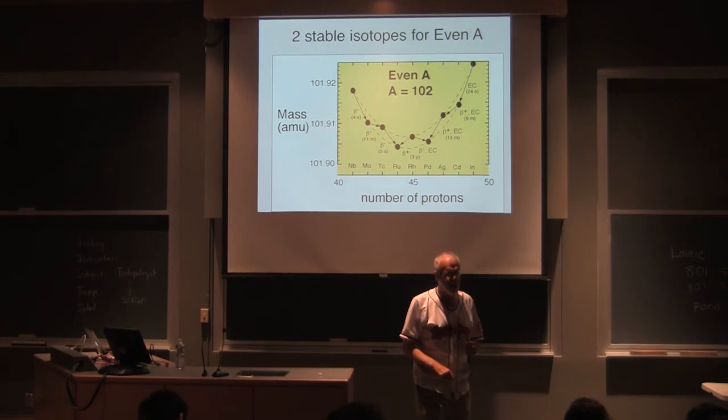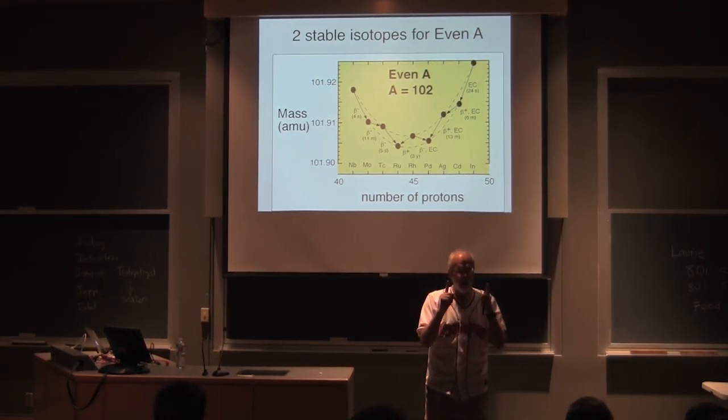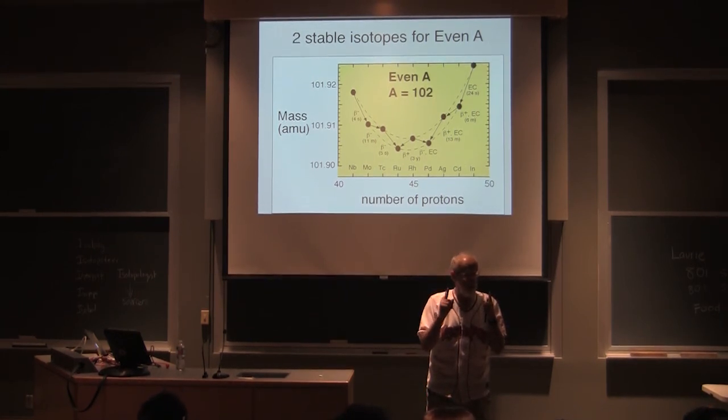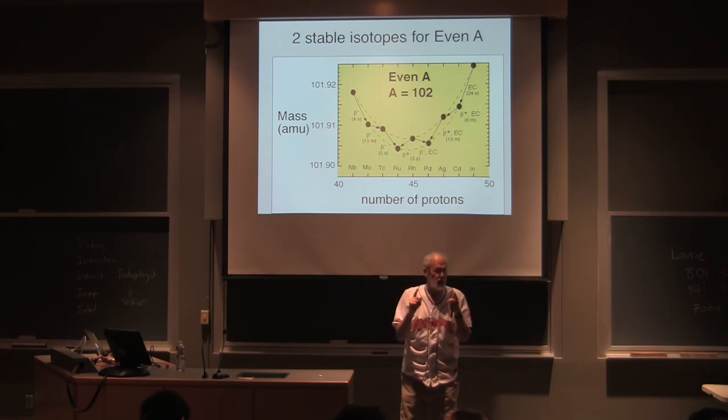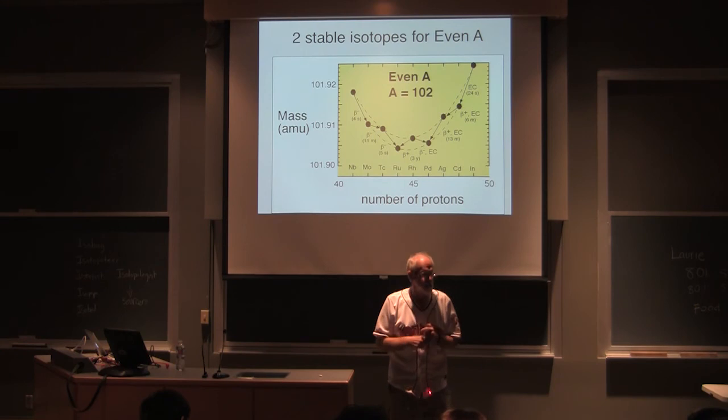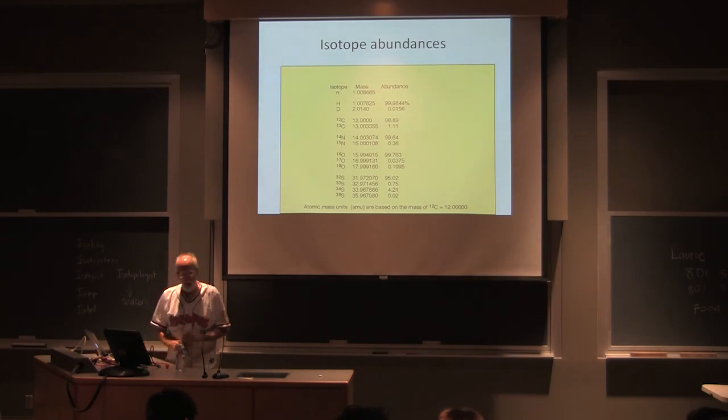And I'll just add that of the odd-odd configurations, those odd-odd are 1,1, 3,3, 5,5, 7,7. So that would be hydrogen, deuterium as 1,1. 3,3 is lithium, 5,5 is boron, and 7,7 is nitrogen. So that odd thing is really not favored.